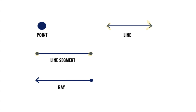The next one is a ray. A ray has one end point, and it goes on and on in one direction. I like to think of it as a ray of sun, where the sun is the start point, and the ray of light goes on and on in just one direction.